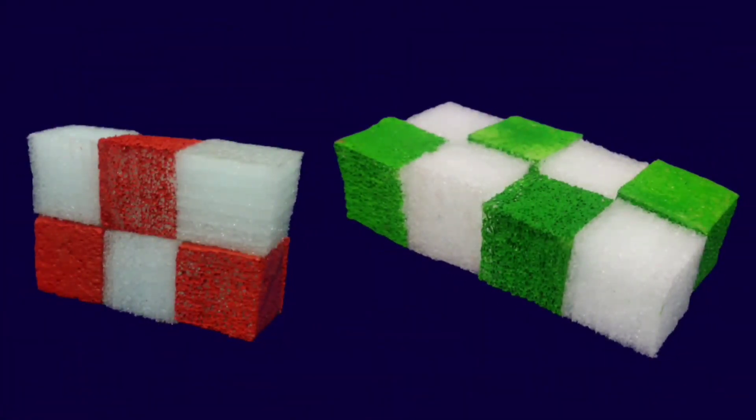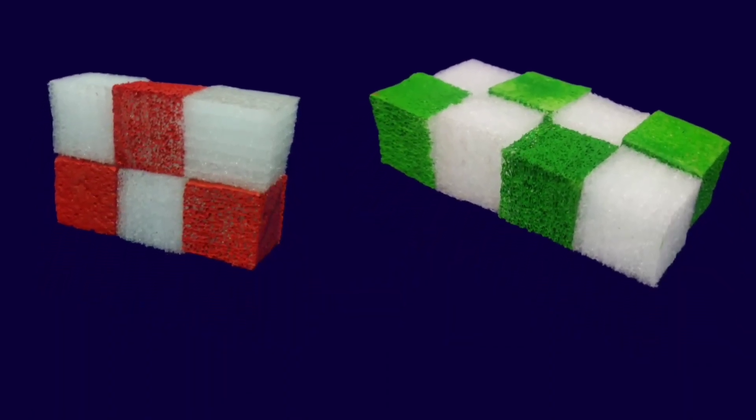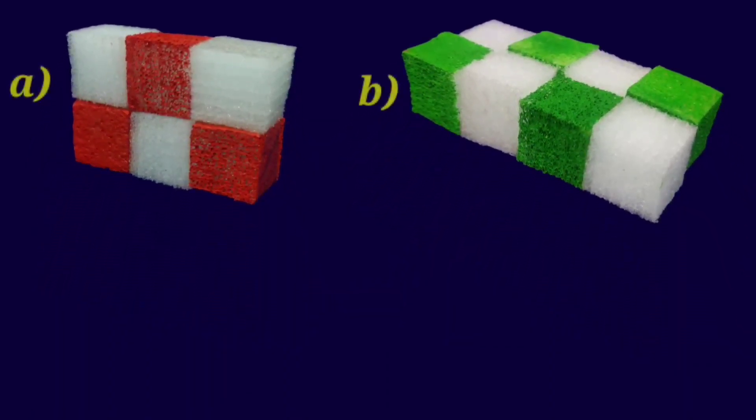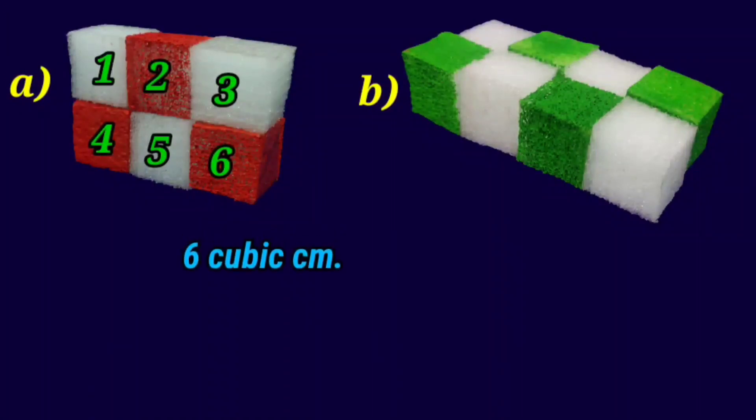Let us find the volume of these cuboids by counting number of cubes. Figure A has 1, 2, 3, 4, 5, 6 cubes, and the volume of 1 cube is 1 cm³. So the volume of 6 cubes is 6 cm³. Therefore, volume of this cuboid is 6 cm³.